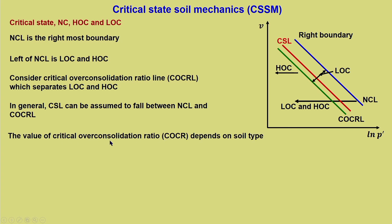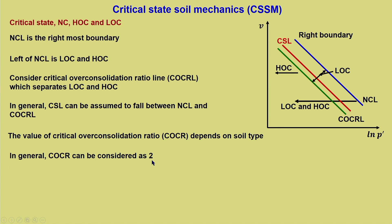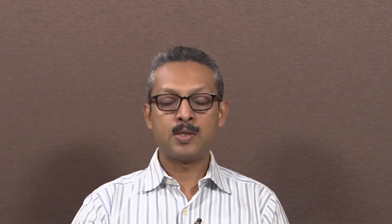In general, the critical over-consolidation ratio (COCR) can be considered as 2. For practical purposes, if the OCR is less than 2 it is LOC, and above 2 it is HOC. These are rules of thumb — not a strict philosophy. The region on the right side of COCRL is called the wet side, and this wet-side/dry-side definition is similar to what we see in the compaction curve with respect to OMC.